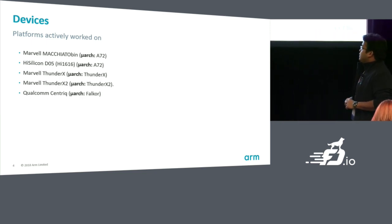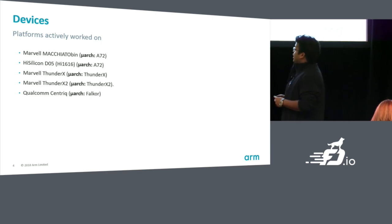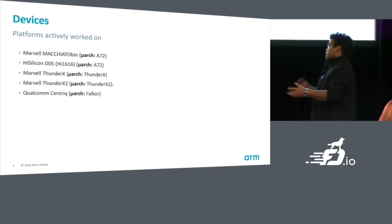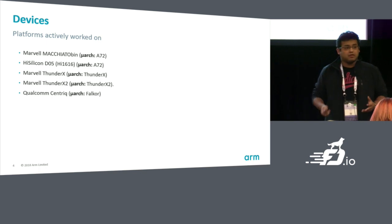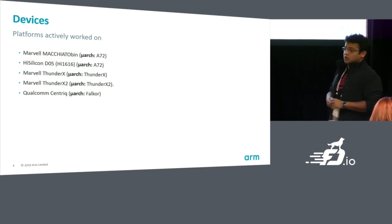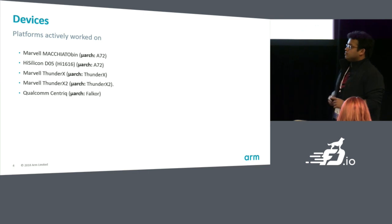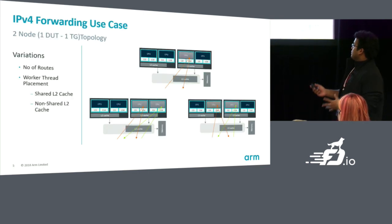The devices are basically Marvel Macchiato Ben, High Silicon, the Marvel Thunder X — which was previously Cavium Thunder X — and the Marvel Thunder X2 and the Qualcomm Centriq.